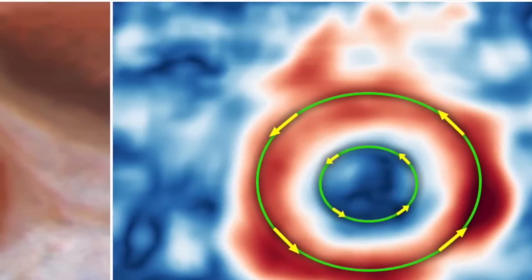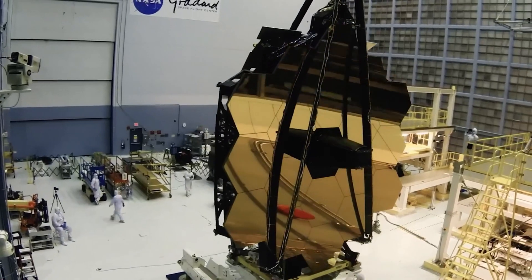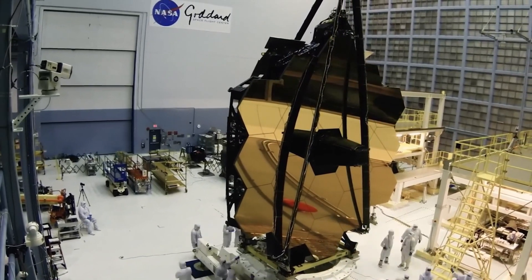Webb will primarily look at the universe in the infrared, while Hubble studies it primarily at optical and ultraviolet wavelengths, though it also has some infrared capability as well.